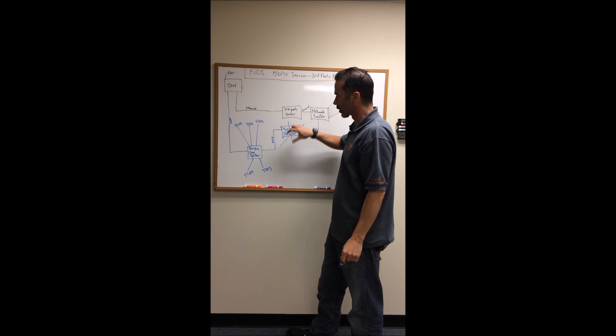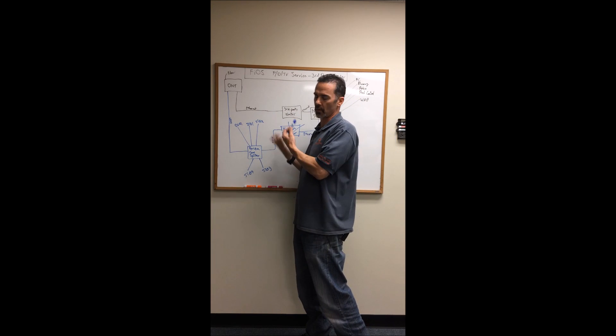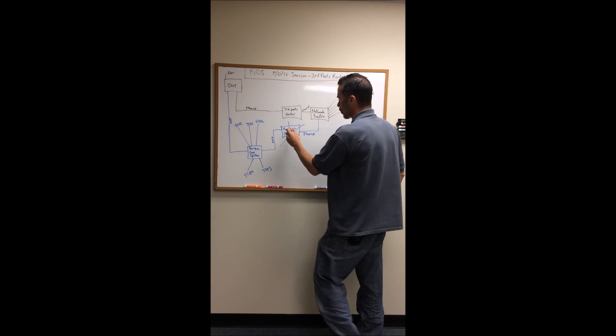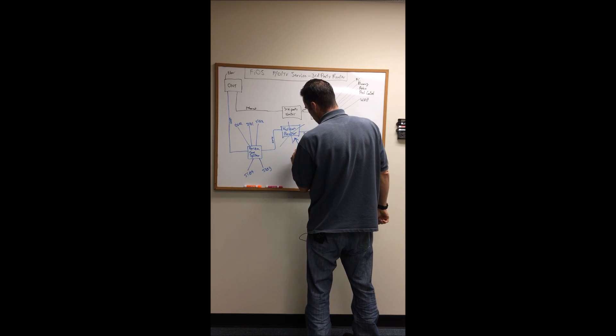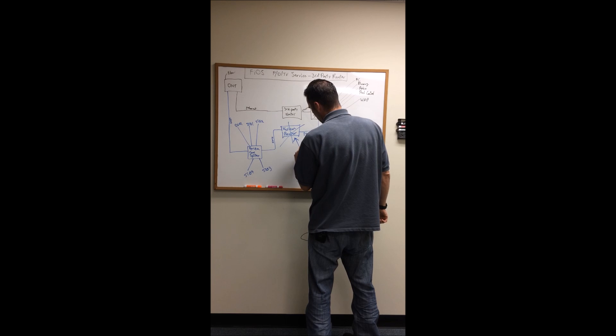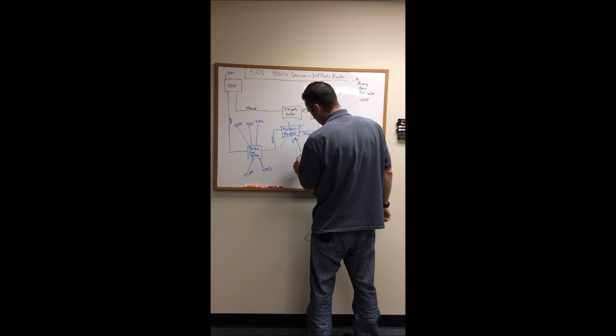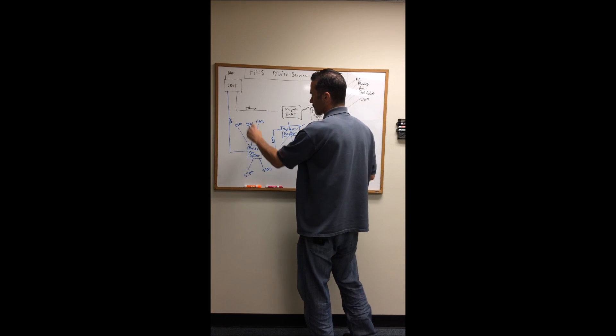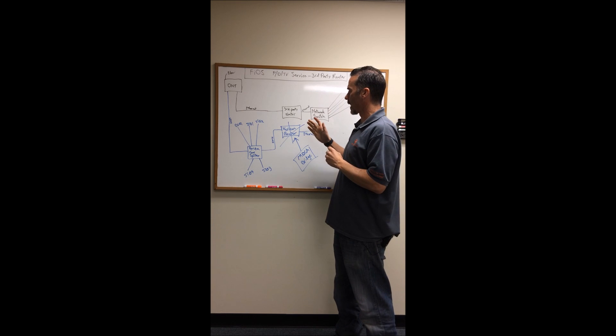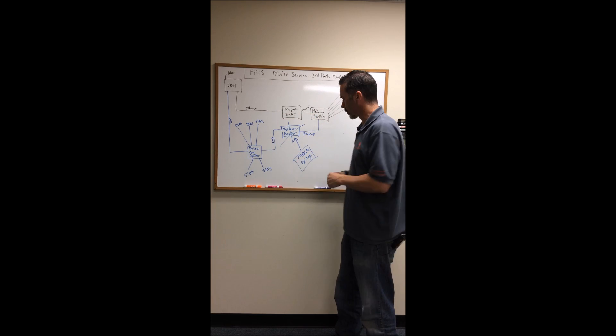So what you want to do instead is when you take this out, you want to put back in something called a Mocha bridge which you can find online. I know Amazon's got a couple for about a hundred bucks and then you inject that network connection back into the TV coax and you'll be good to go.